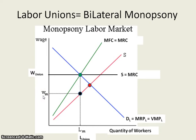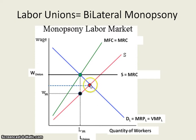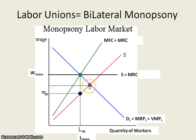The economist would of course like them to choose the wage rate at the market level where supply and demand intersect. A lot of times this is where we'll say the arbitrator will agree, because this is the perfectly competitive outcome that would seem the most fair.